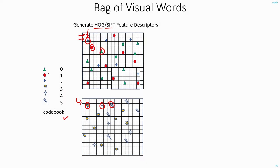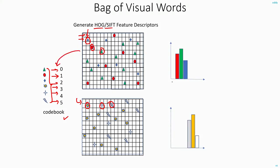In my codebook, I have 6 different features: triangle, circle, plus, blast symbol, star and lightning. This is the association that I have created, and this forms my codebook. Once you have the codebook, you can just draw the histograms. You simply count the number of circles, triangles and plus symbols in each image. So you will have around 10 triangles, 6 plus symbols and 8 circles. Similarly, from the second image, I can create its histogram.